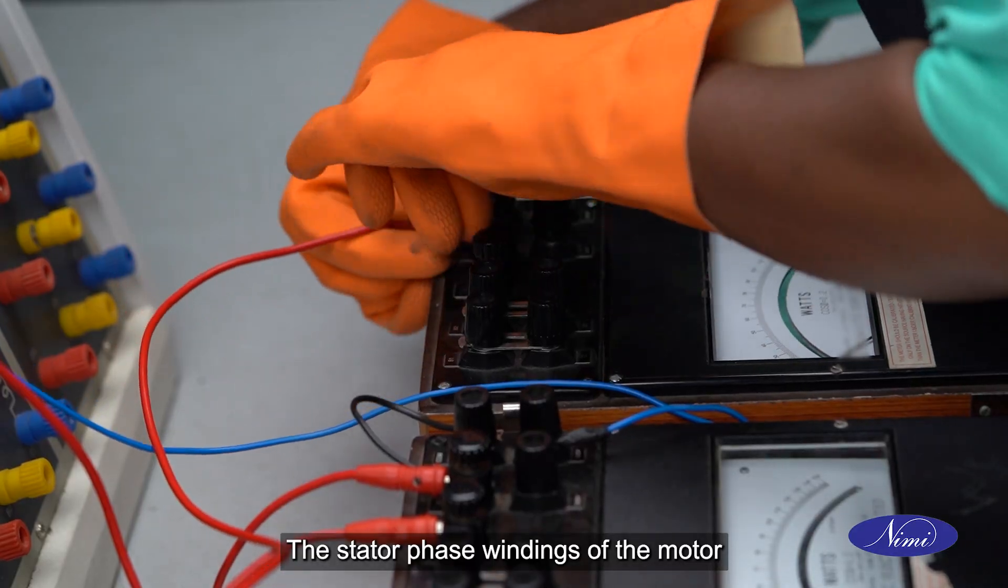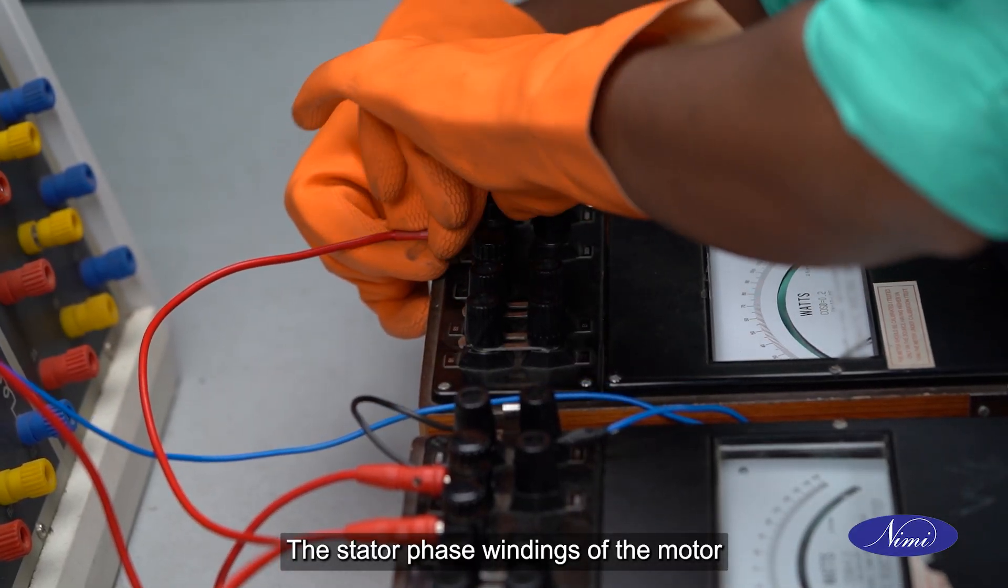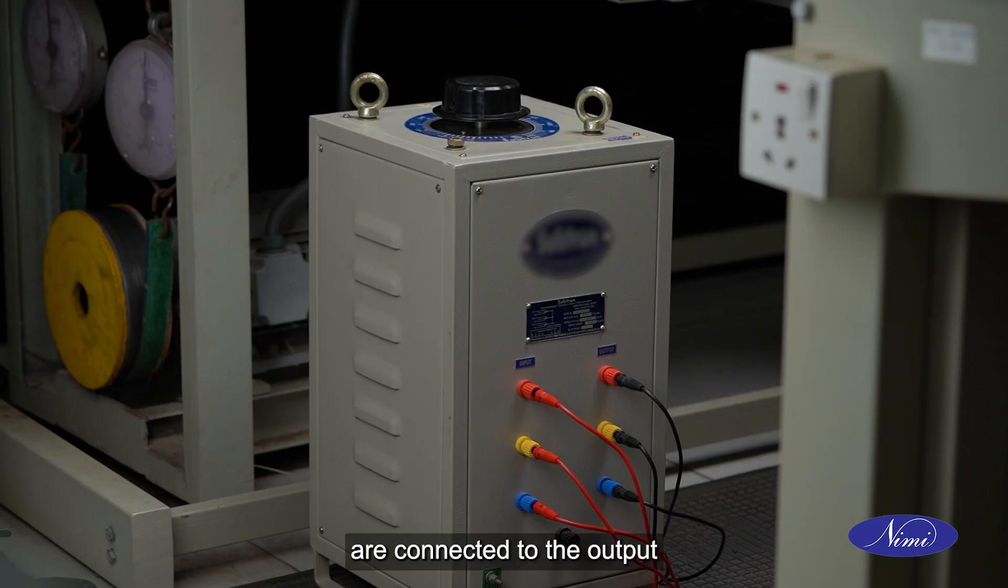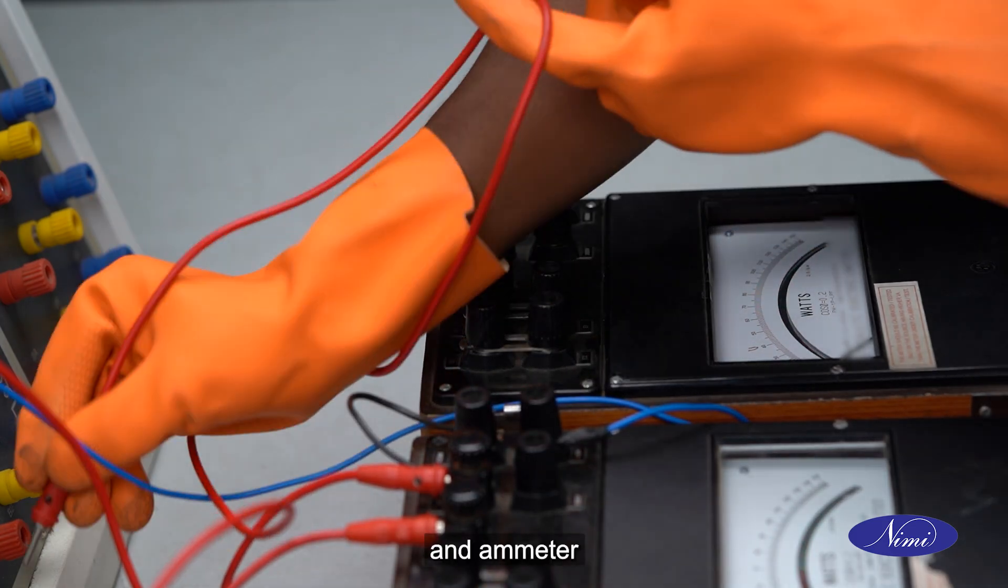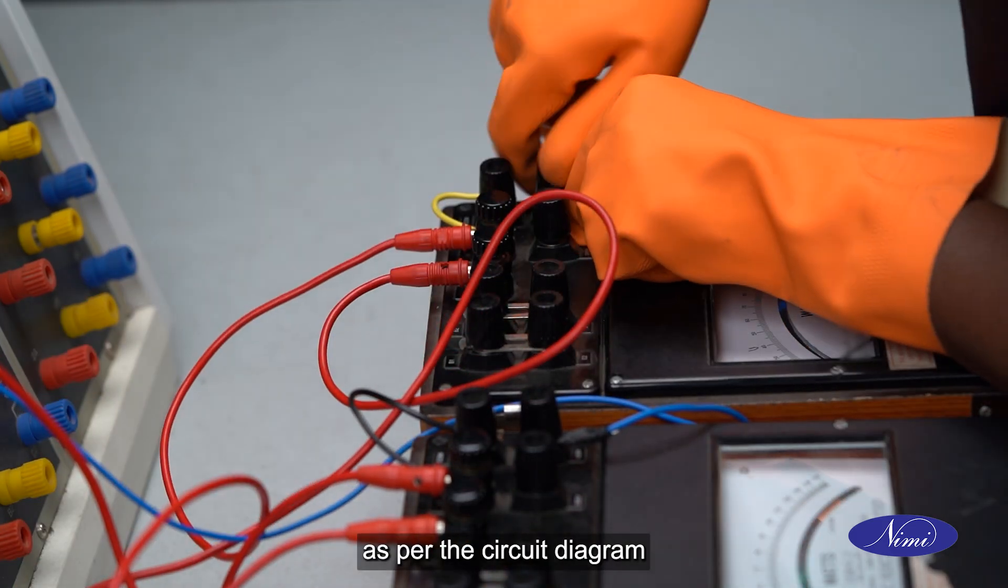The stator phase windings of the motor are connected to the output of the auto transformer through wattmeters and ammeter as per the circuit diagram.